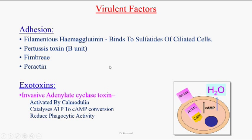The virulence factors for adhesion to human tissues are filamentous hemagglutinin, which always binds to sulfatide receptors on ciliated cells. One more adhesive factor is pertussis toxin B unit, which attaches to ciliated cells via lactosylceramide receptors, glycolipid receptors, and phagocytes.